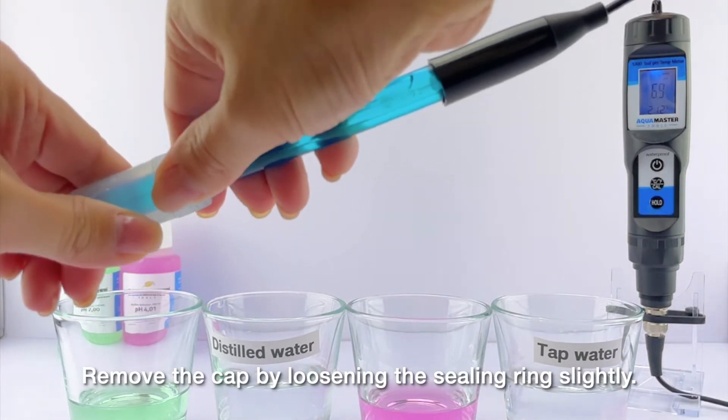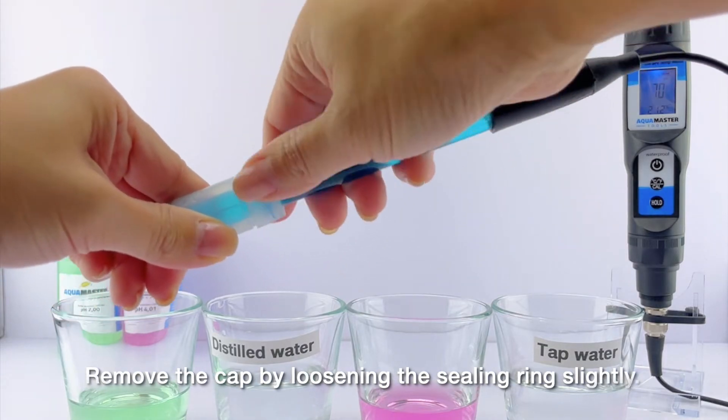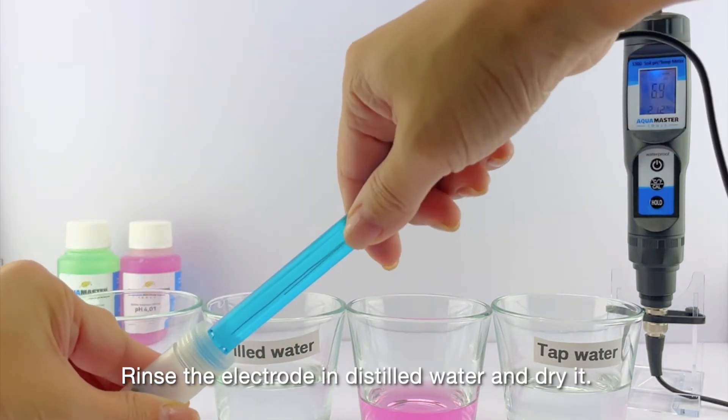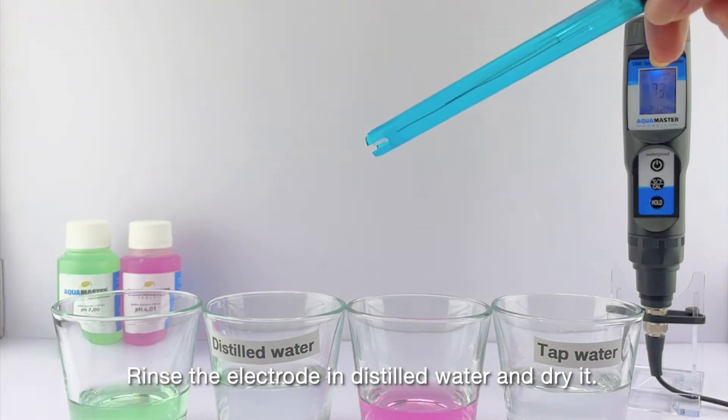Remove the cap by loosening the sealing ring slightly. Rinse the electrode in distilled water and dry it.